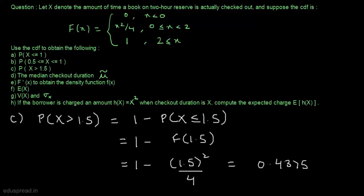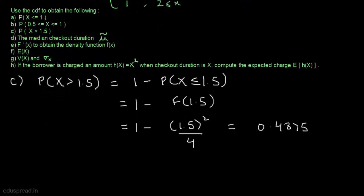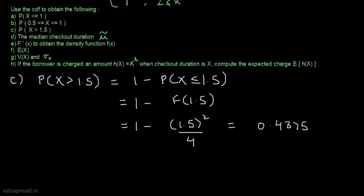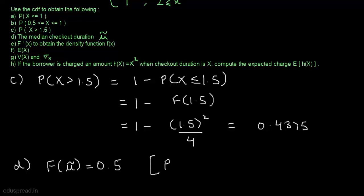Let's move to part D. In part D, we have to calculate the median checkout duration, that is μ̃. We know that the probability to the left of the median is 0.5 and to the right is also 0.5. So to calculate the median, we need to find a value such that F(μ̃) = 0.5, meaning P(X ≤ μ̃) = 0.5.